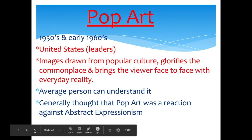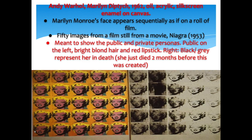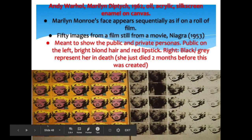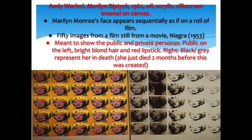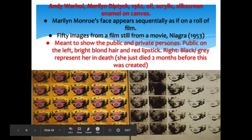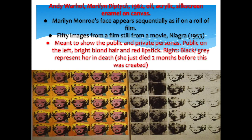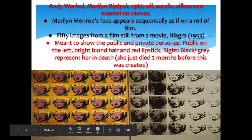The piece you need to know for Pop Art is Andy Warhol's 'Marilyn Diptych,' from 1962 — created only a couple of months after Marilyn Monroe's death. It is oil and acrylic on silk-screened canvas. Monroe's face appears sequentially as if on a roll of film — 50 images, all from the 1953 movie 'Niagara.' The left side is bright and colorful, showing her public persona with red lipstick and bright blonde hair. The right side is black and gray, representing her private life and death — especially the darkest images — as she had died just two months before the work was completed.